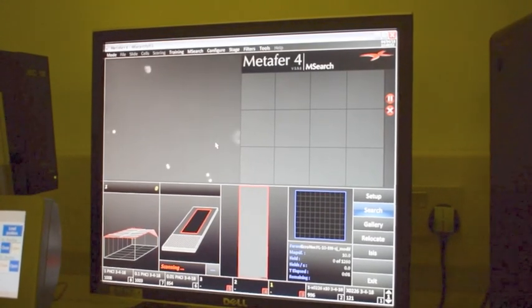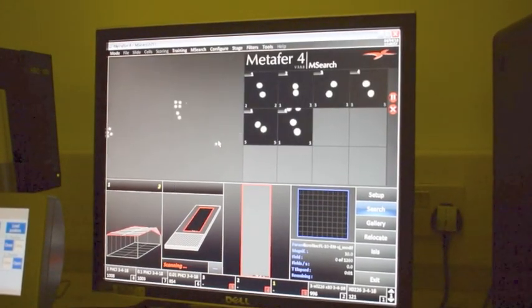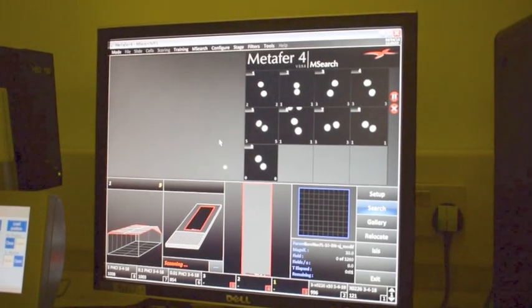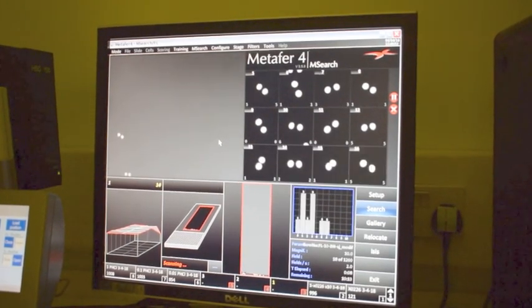The cell images are captured and the gallery is then checked by eye to avoid capturing of false positives and false negatives.